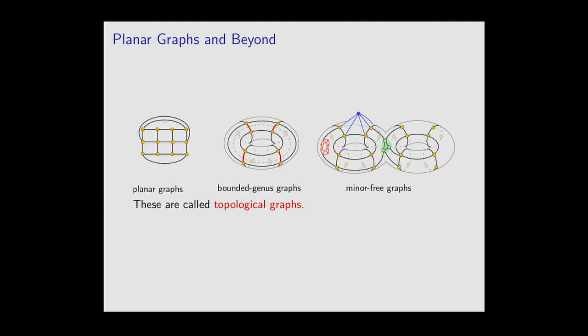I talk about planar graphs and beyond. A planar graph is a graph you can draw on the plane without edge crossings. The middle example is a graph embedded on a surface like a genus-1 torus — a generalization of planar graphs. There's also a more general class called minor-free graphs, whose structure is a lot more complicated to describe. Most of the talk focuses on planar graphs; 'beyond' refers to the graph on the right.